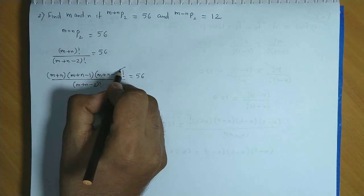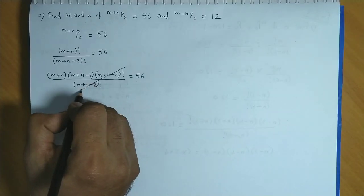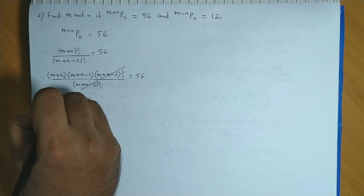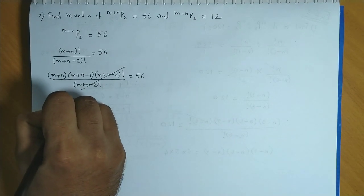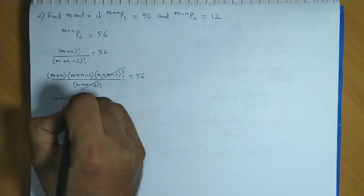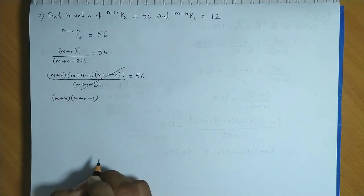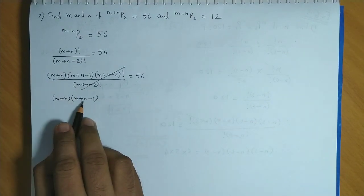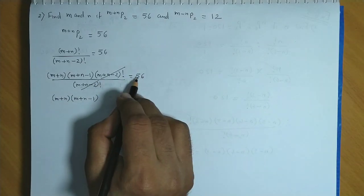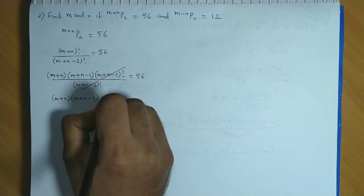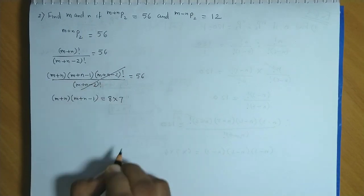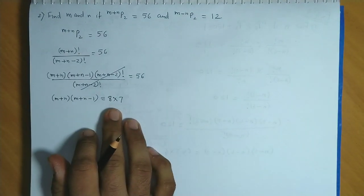Now m plus n minus 2 factorial cancels out and we have two factors m plus n and m plus n minus 1. Now these two factors are consecutive and difference is equal to 1. Now we can also write 56 as 8 into 7. So we have similar arrangement on both sides.